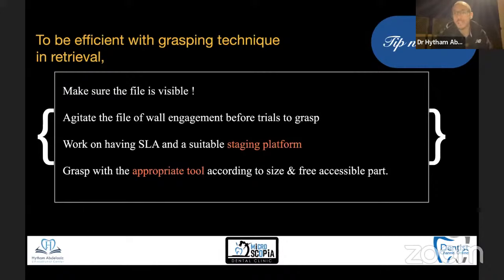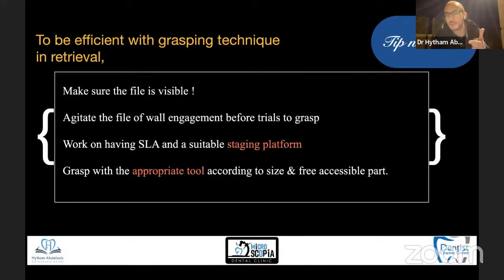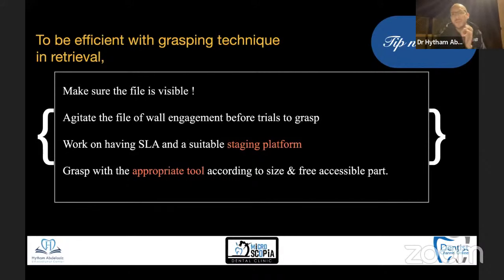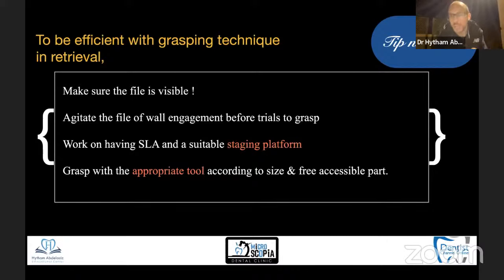Comparatively, for grasping we have a couple of things that are necessary. With agitation, you don't necessarily need to see the file — it's good if you have visibility but not required. But for retrieval using grasping, you have to see the file. So with any file that is separated in the middle or apical third, you have to have magnification more than 8x — which means any file separated in the middle or apical third requires a microscope. Here comes the necessity of the equipment, because you have to see if you want to grasp, and you have to be able to see the file so that you can position your grasping instrument over it.